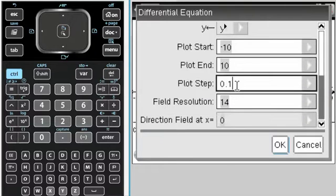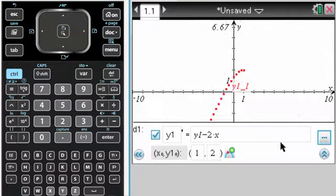And here's what we want, plot step. So if I say the plot step is 0.25, so say I'm doing Euler's method with a step size of 0.25. Press OK.